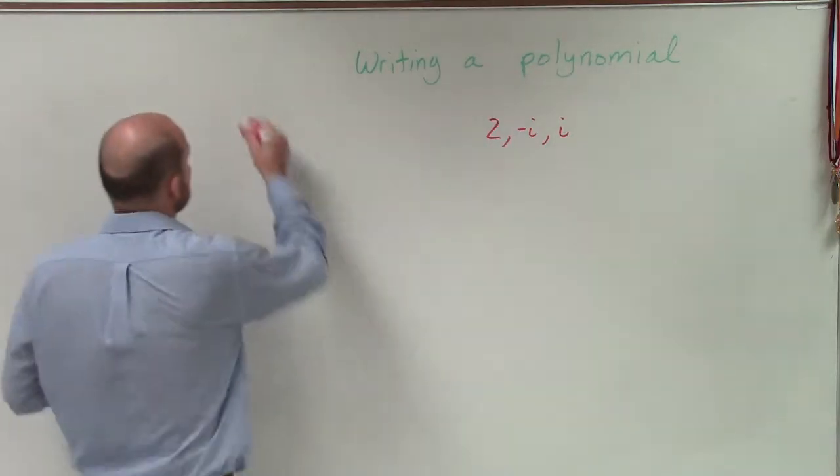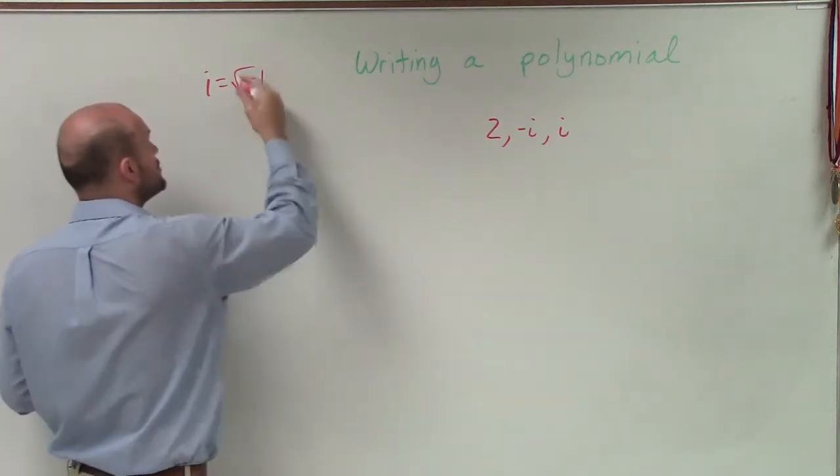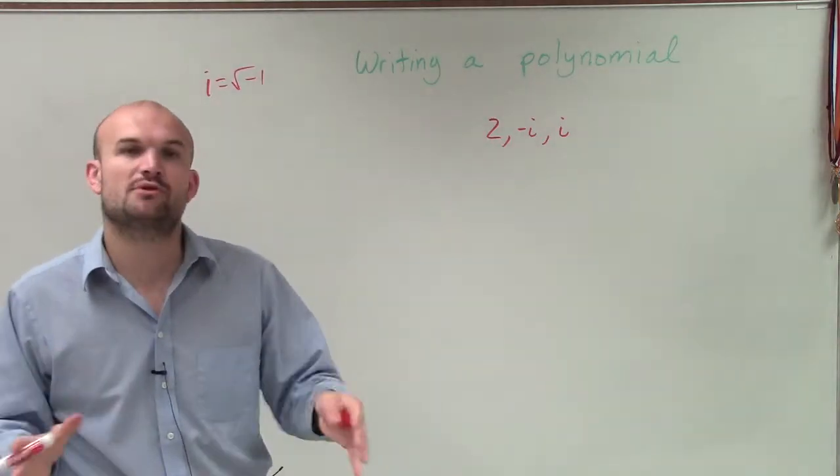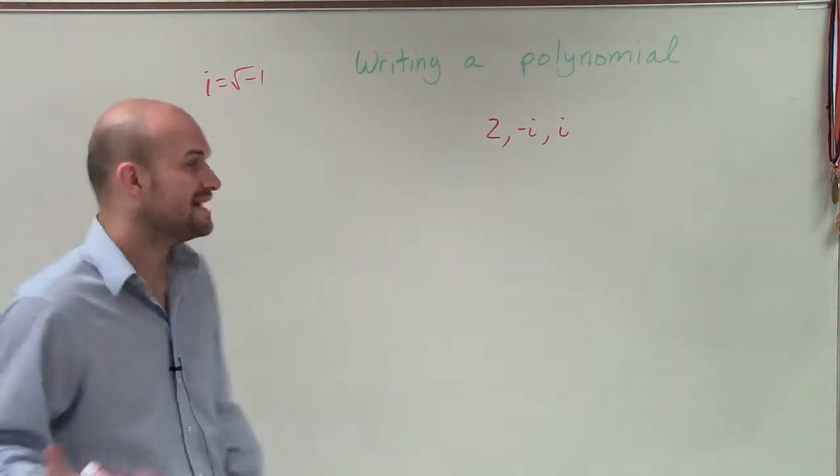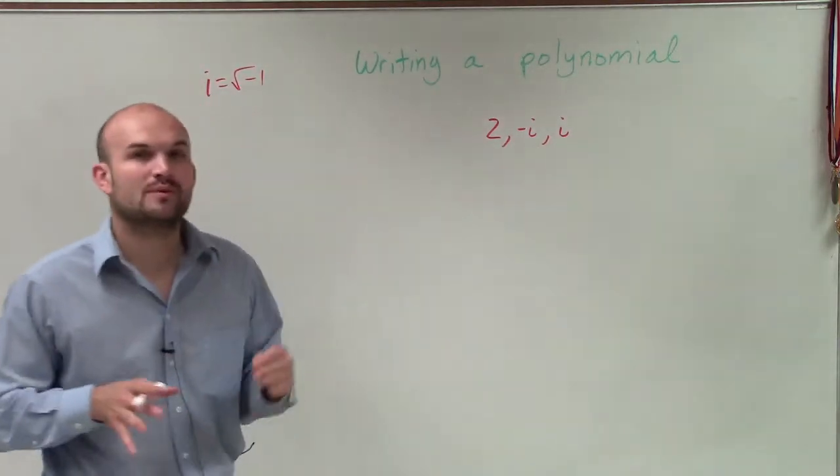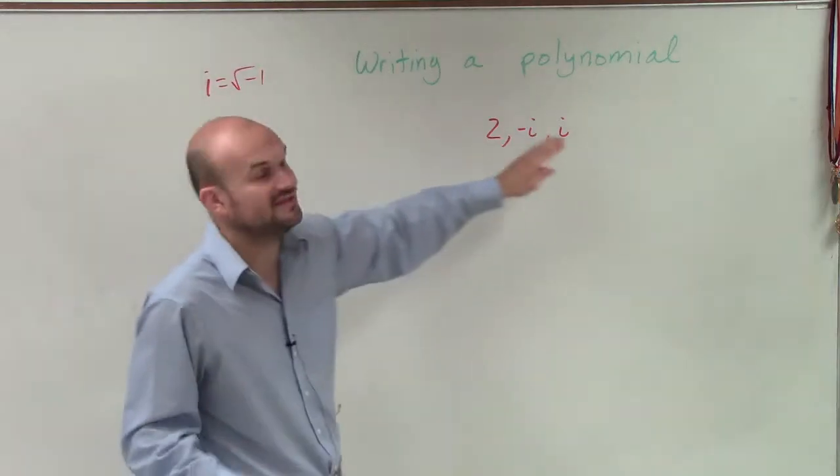And why again? Well, because remember, i equals the square root of negative 1. So if we're going to be squaring, whenever we're taking the square root, remember, when we introduce the square root, we have to include both the positive and the negative value of this. So when we're given the zeros, we have to make sure whenever we have an i, and if we don't present both of them, we have to make sure we have the positive and the negative.